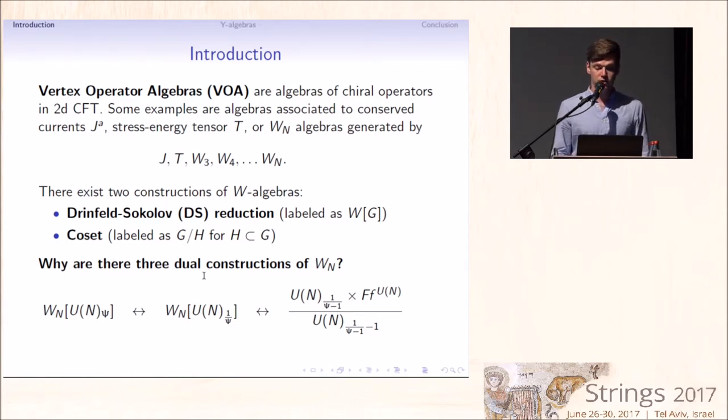One, which is Drinfeld-Sokolov reduction of U(N) Kac-Moody algebra at level psi, another, which is Feigin-Frenkel dual, which is Drinfeld-Sokolov reduction of the same Kac-Moody algebra at level 1 over psi, and one, which is familiar coset construction.